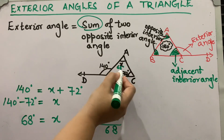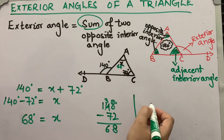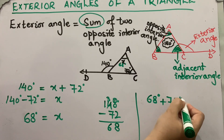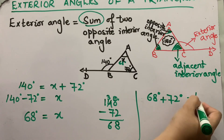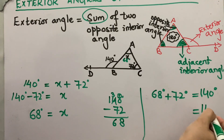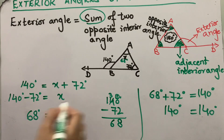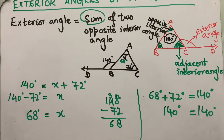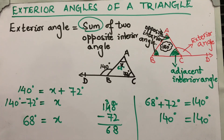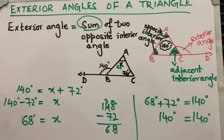Now let's check: 68 degrees plus 72 degrees equals 140 degrees. This is 140 degrees, so it is verified that the exterior angle of a triangle is equal to the sum of the two opposite interior angles.